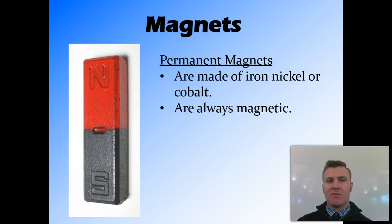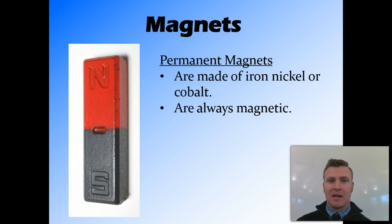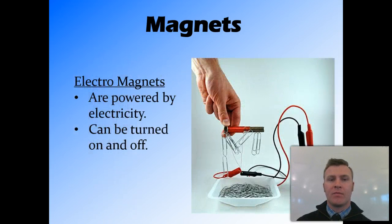There are two different types of magnets that we use. Permanent magnets are made of iron, nickel, or cobalt — three different metals — and they are always magnetic. They stay magnetic the whole time and can't be turned off. Electromagnets, on the other hand, can be turned on and off and require electricity to be used.